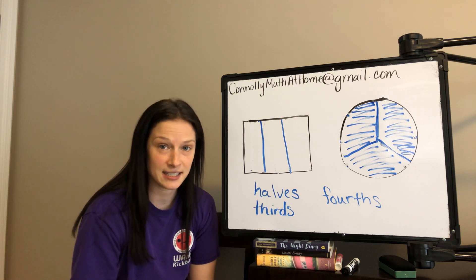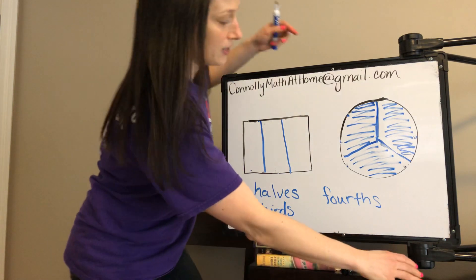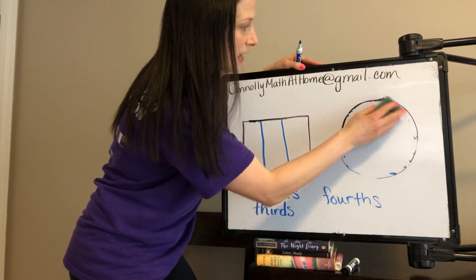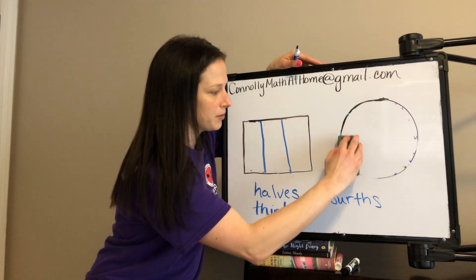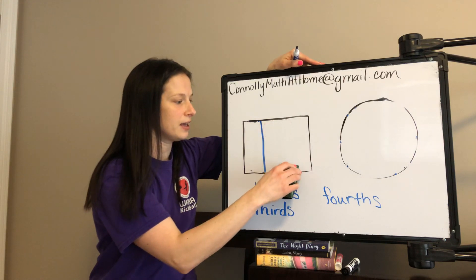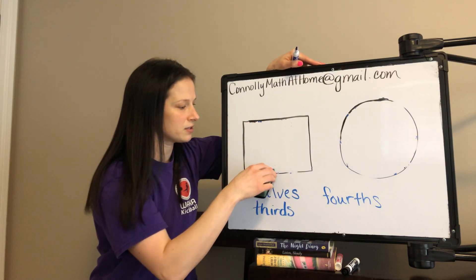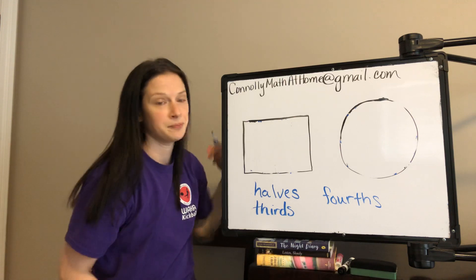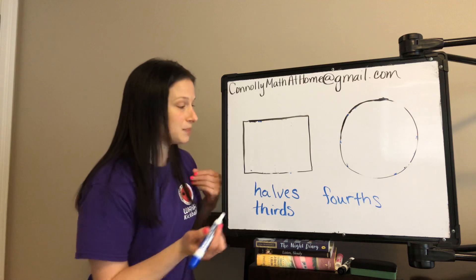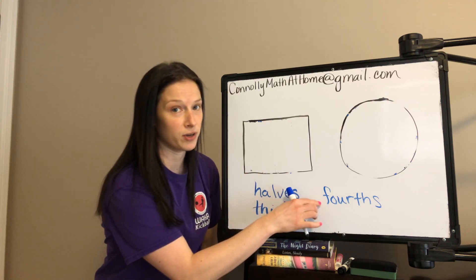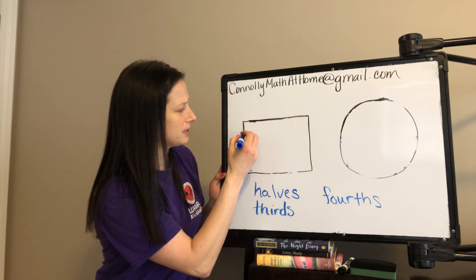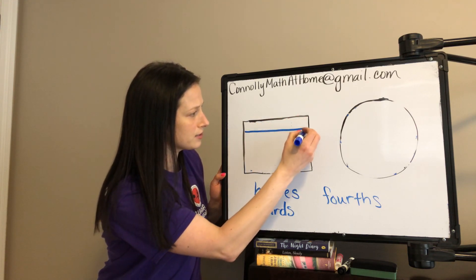The last set of fractions you're dealing with in second grade is fourths. While I'm erasing, I want you to make a prediction about how many equal pieces I would be making if I was thinking about fourths. How many equal pieces do you think it would be? I hope that you guessed four. When we're thinking about fourths, you want to make sure you have four equal pieces. You can split things whichever way you want, as long as they're four equal pieces.